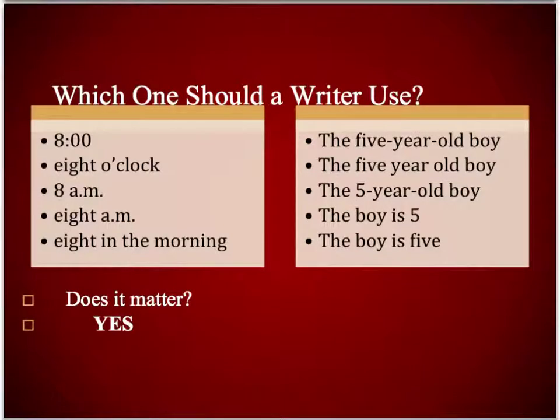As a little precursor quiz, which one of these do you think you should utilize? If you're writing a story that has 8 o'clock in it, do you use a numeral, write out 8, use the colon with the double zero, use A period M period for ante-meridian? Same question for the 5-year-old boy — do you write out 5, use the numeral 5, or hyphenate it? How do you know what to do?